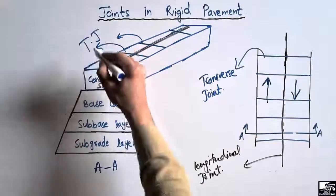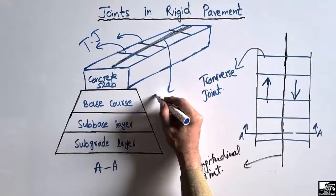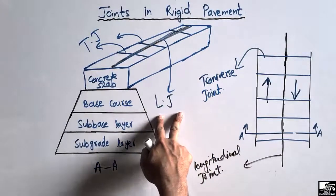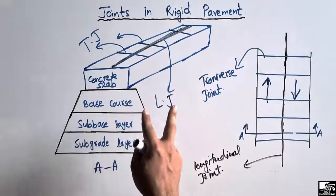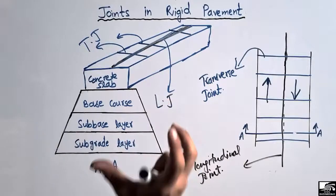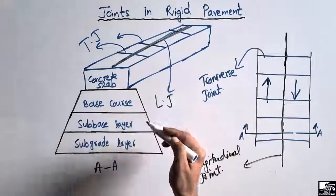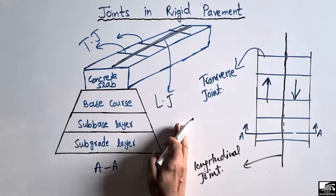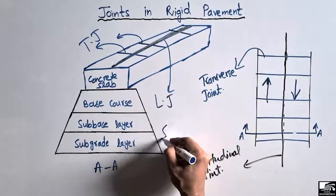So these are the two types of joints provided in the concrete slab, or we can say in the rigid pavement, in order to resist thermal stresses. During temperature change, stresses are created inside the concrete slab, and these joints help resist those thermal stresses. The main purpose of these joints is to avoid the formation of thermal stresses inside the rigid pavement.